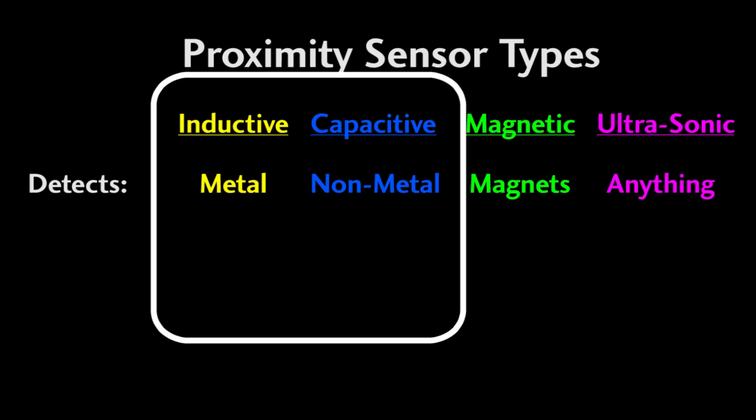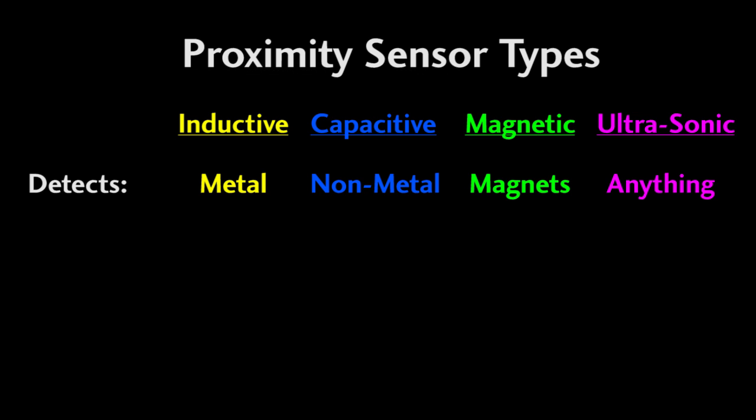Magnetic sensors are covered in a separate video. Ultrasonic sensors are used for object detection, but they are also used for distance sensing so we will look at those in more detail in the distance measuring video. Detection ranges for these sensors max out around these numbers.